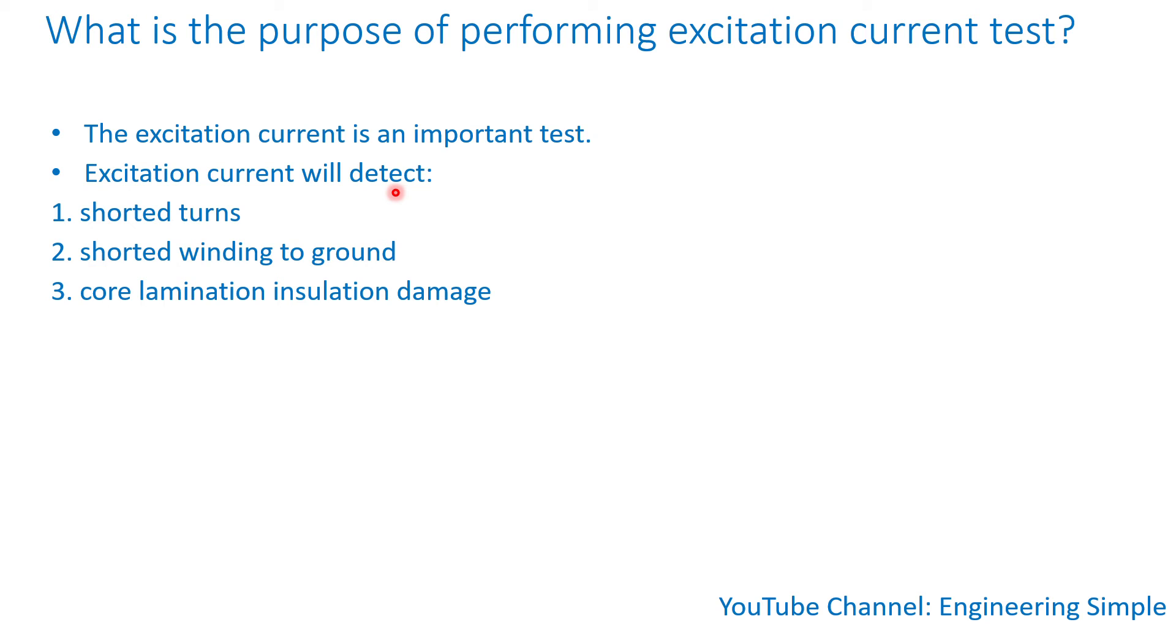So if that insulation is scratched or damaged, you will have circulating current in that area.